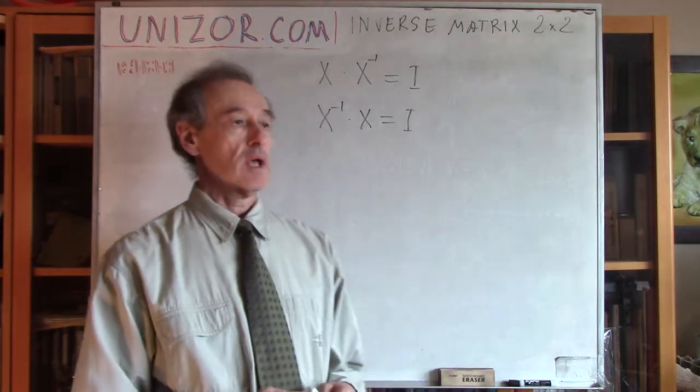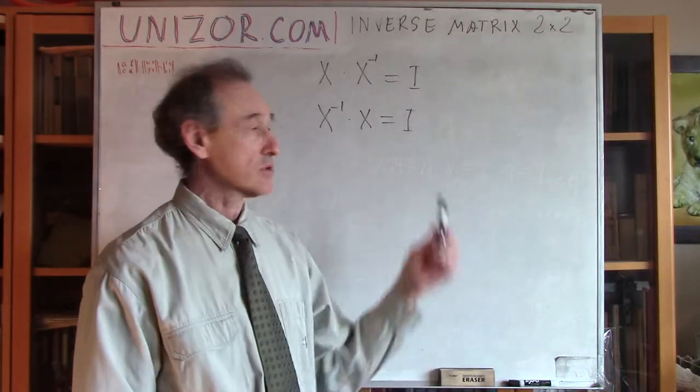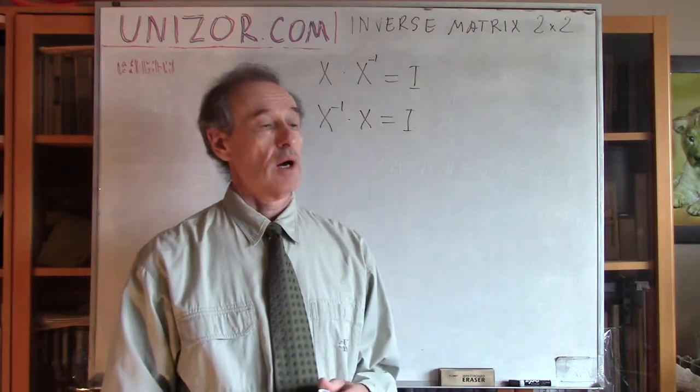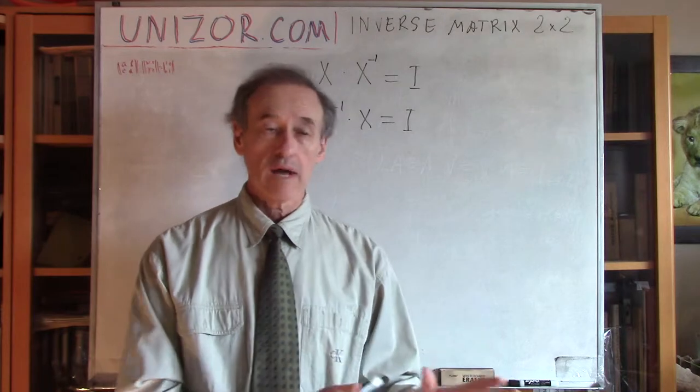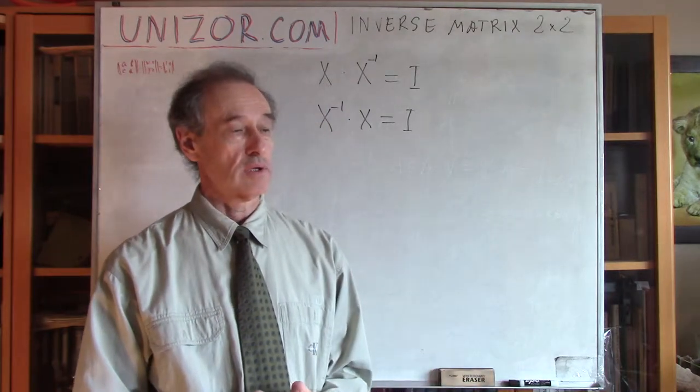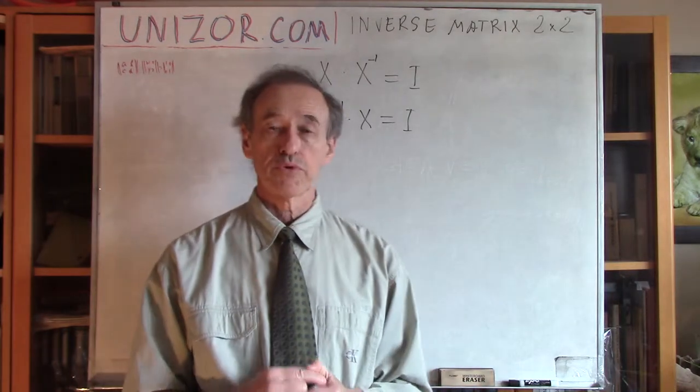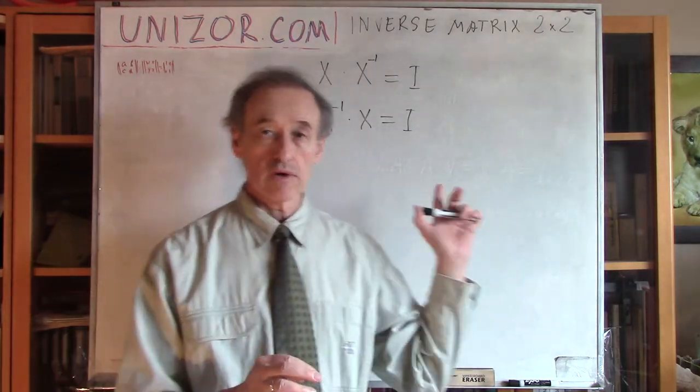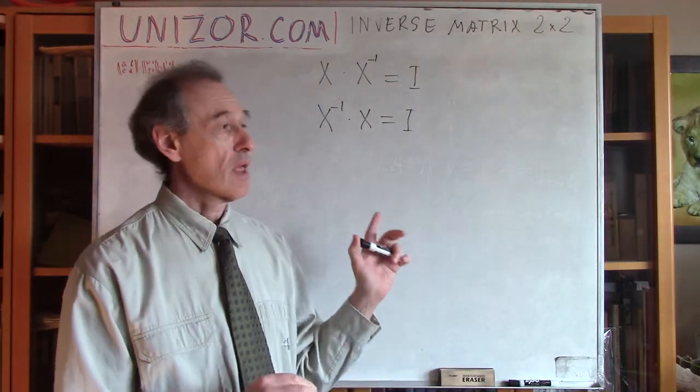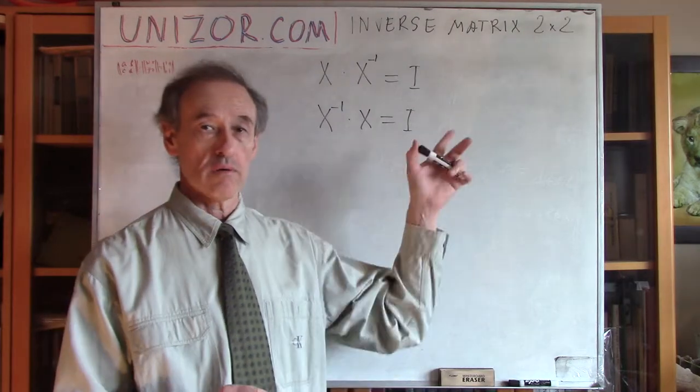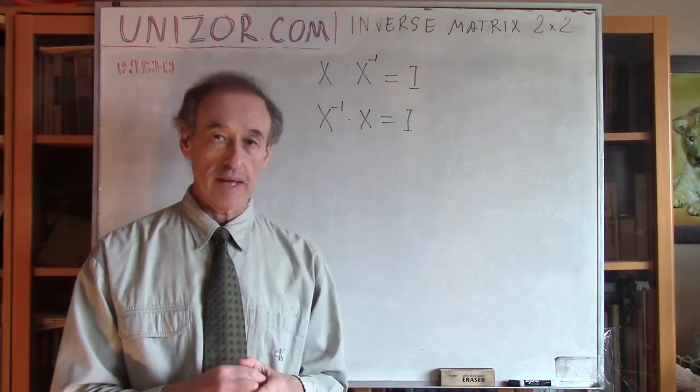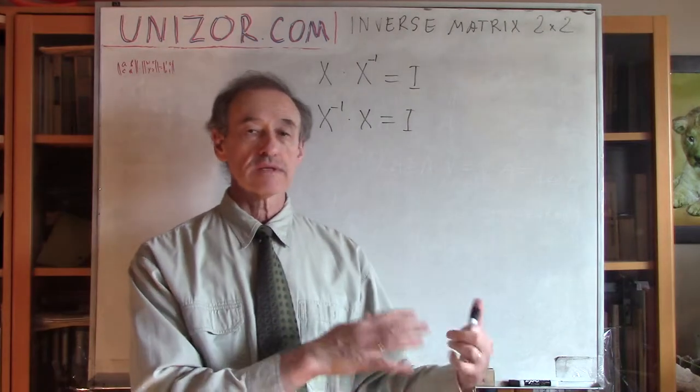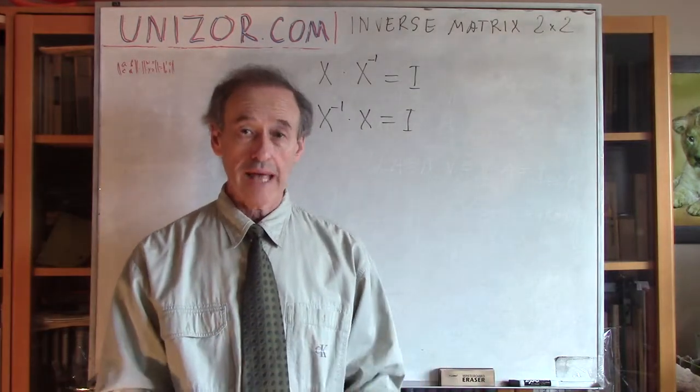We also investigated certain properties. For instance, certain matrices do not have inverse, like the matrix, for instance, with one row equals to zero. We already discussed that in the previous lecture, and we have also proven that if the inverse matrix exists, then it must be unique. There are no two different inverse matrix for a given matrix.